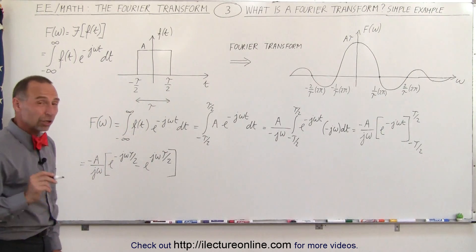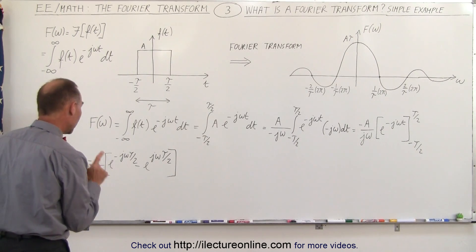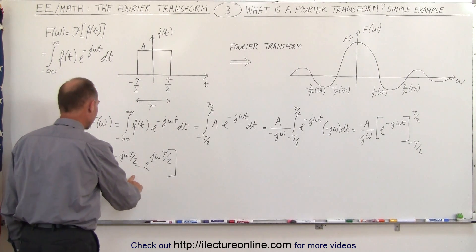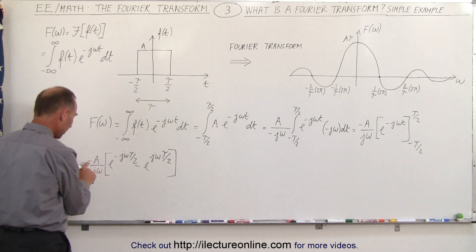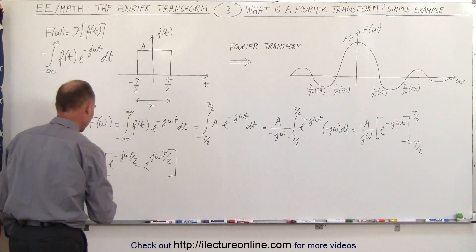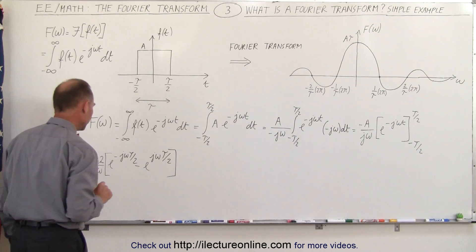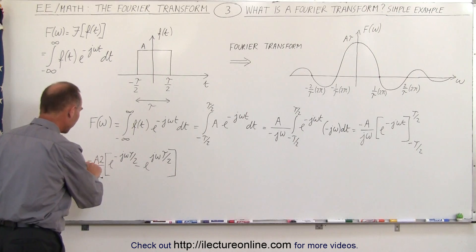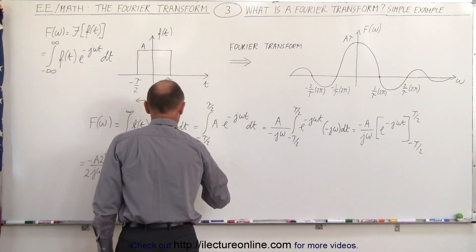Now this is beginning to look a lot like the complex form of the sine. All we need to have in the denominator here is a 2j and we want to reverse the order we can do that by using this negative here. So I'm going to need a 2 in the denominator so I multiply the numerator by 2 and we're going to reverse that by applying this negative sign.